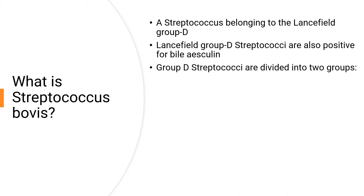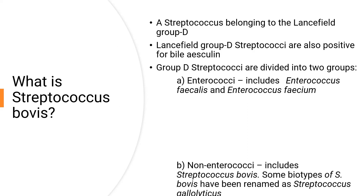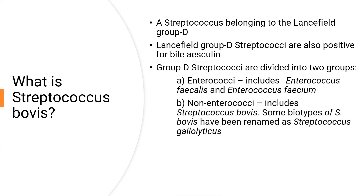Group D streptococci are divided into two groups. Enterococci, which includes Enterococcus faecalis and Enterococcus faecium — they are common commensals in the gut. Non-enterococci, which includes Streptococcus bovis. Some biotypes of Streptococcus bovis have been renamed as Streptococcus gallolyticus.